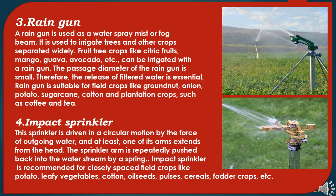The fourth type of sprinkler irrigation is the impact sprinkler. This sprinkler is driven in a circular motion by the force of outgoing water, and at least one of its arms extends from the head. The sprinkler arm is repeatedly pushed back into the water stream by a spring. Impact sprinklers are recommended for closely-spaced field crops like potato, leafy vegetables, cotton, oilseed, pulses, cereals, and fodder crops.